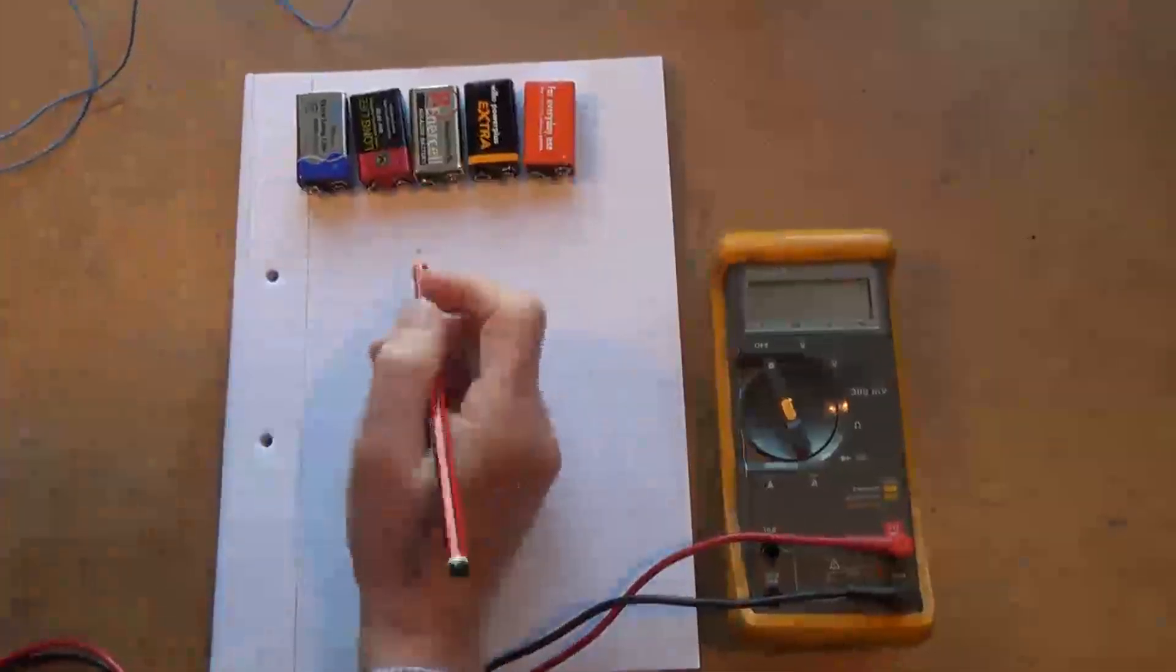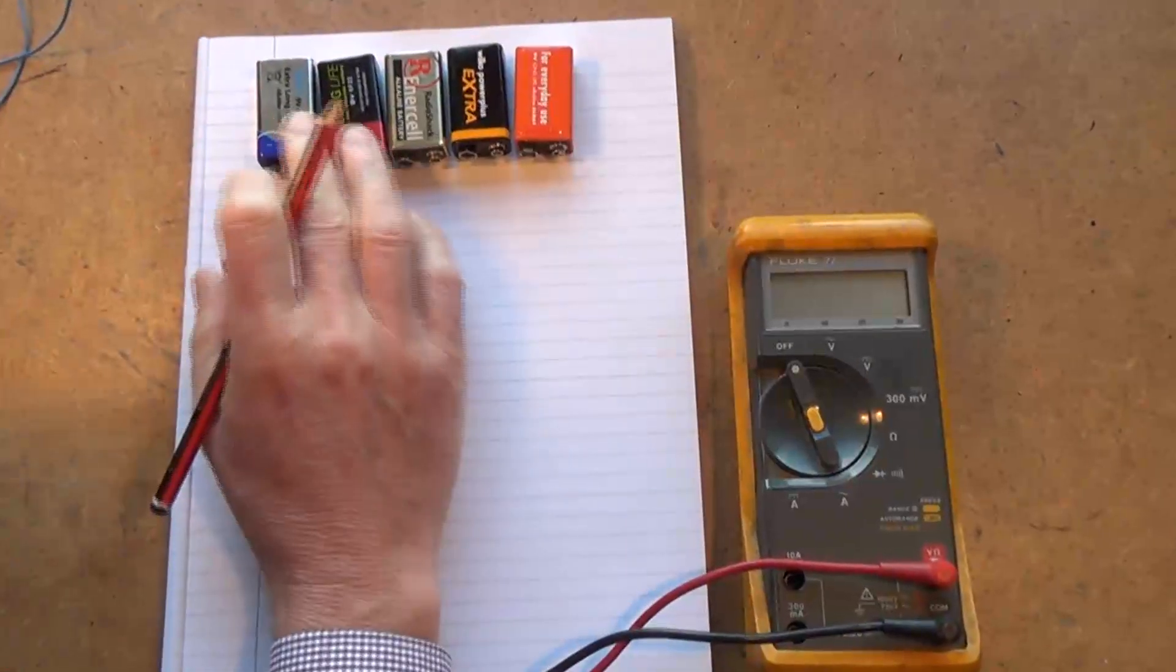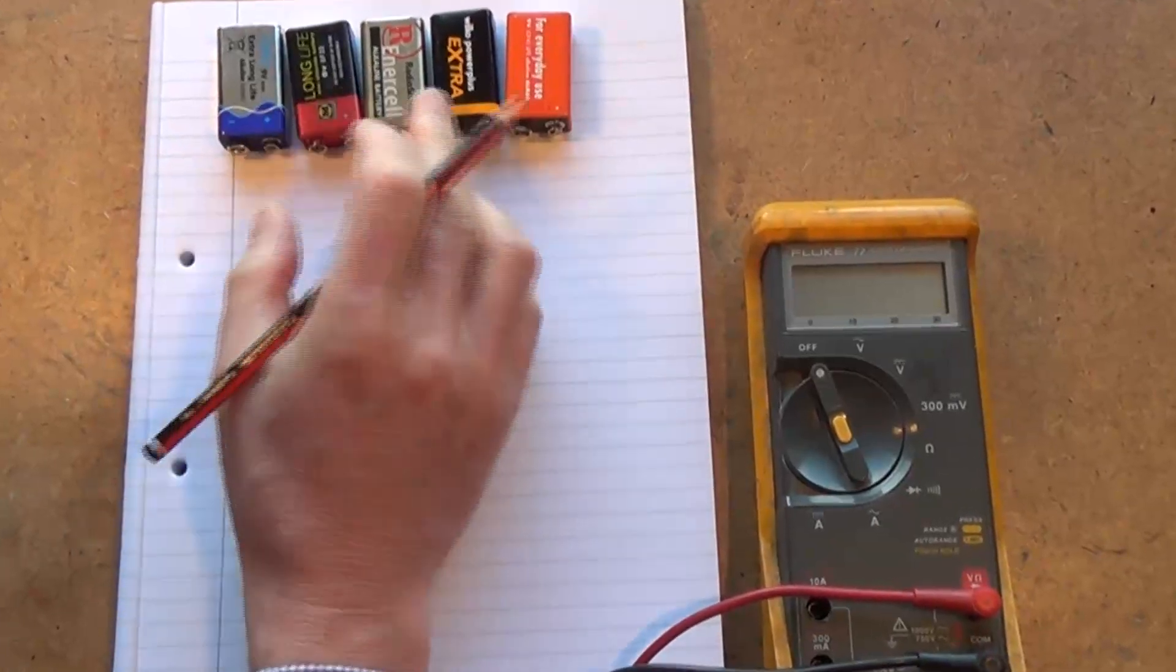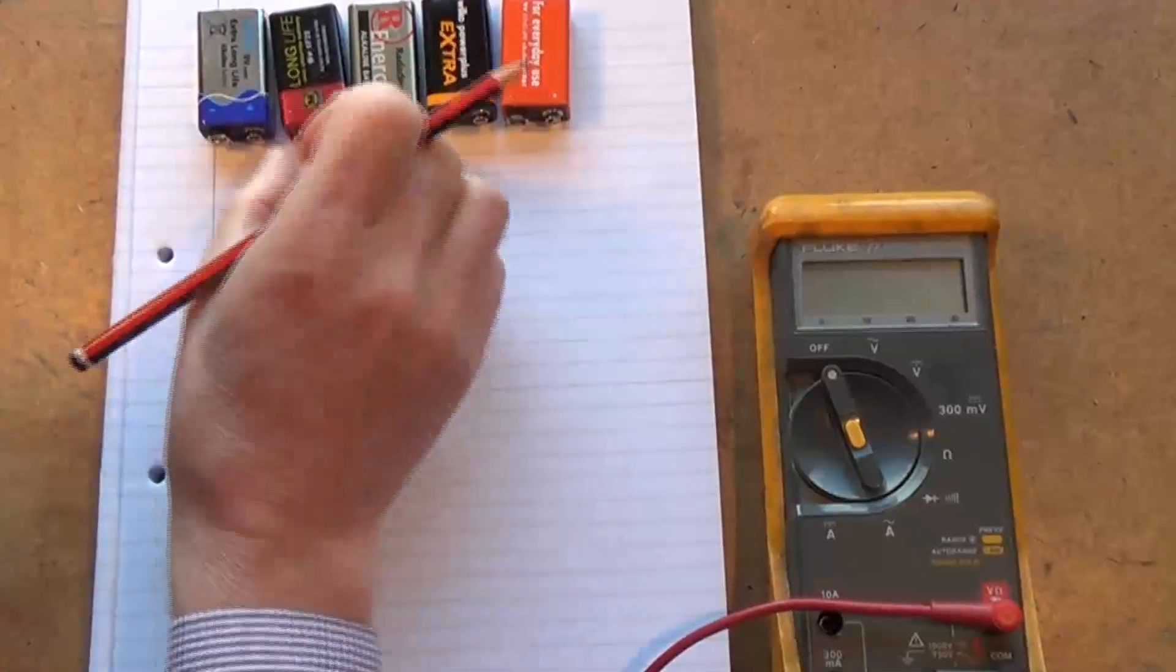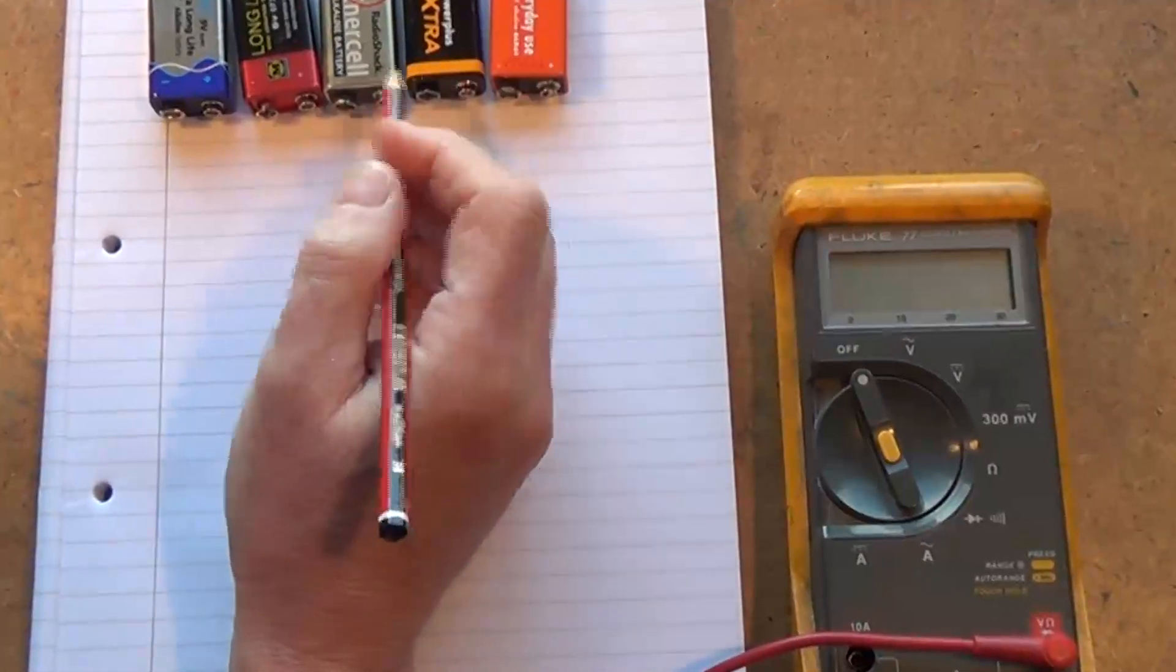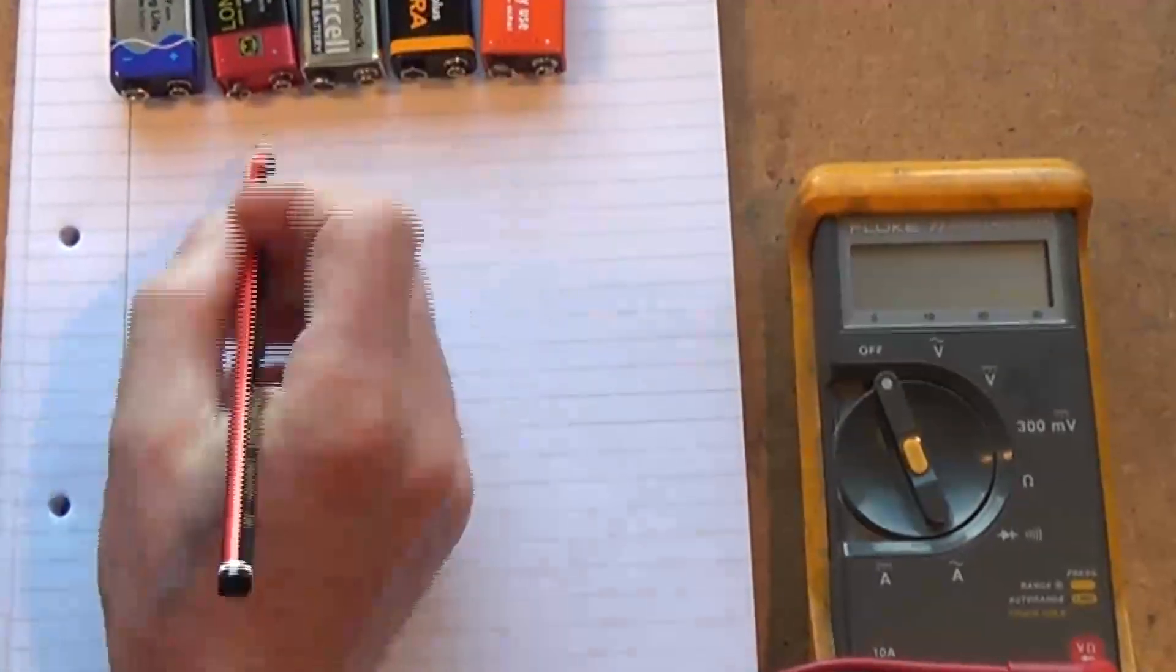Hi guys, I thought you might find this interesting. I'm looking at a bunch of batteries here. When a battery goes flat, obviously if you measure the voltage, the voltage is reduced. But there's something else going on in the battery and that is its internal resistance increases.